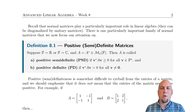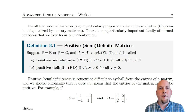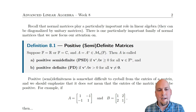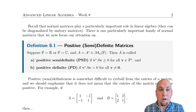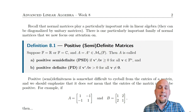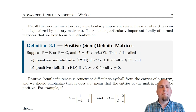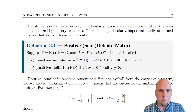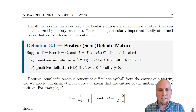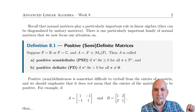Hey folks, my name is Nathan Johnston, and welcome to lecture 30 of Advanced Linear Algebra. In this class, we're going to introduce the final family of matrices that we're going to see in this class. These matrices are called positive semi-definite. The intuition to keep in the back of your mind is that positive semi-definite matrices are sort of like the matrix version of numbers that are bigger than or equal to zero.